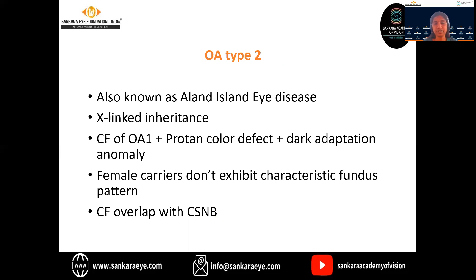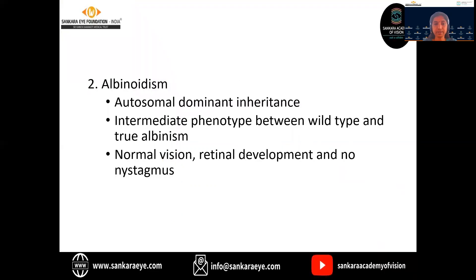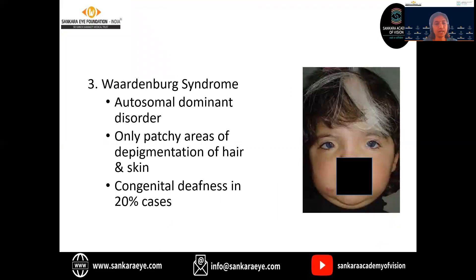The female carriers in type 2 don't exhibit the characteristic fundus pattern as seen in type 1 patients. The clinical features here overlap with the congenital stationary night blindness. Regarding the syndromic forms, oculocutaneous albinism is defined by the defect in melanin production, while various syndromic forms have defects in the packing and trafficking of cellular proteins. First is the Hermansky-Pudlak syndrome, an autosomal recessive disorder associated with a bleeding tendency due to platelet storage deficiency, along with interstitial lung disease and granulomatous colitis. Albinoidism has an autosomal dominant inheritance. It is an intermediate phenotype between the wild type and true albinism, and usually the children have normal vision and retinal development.